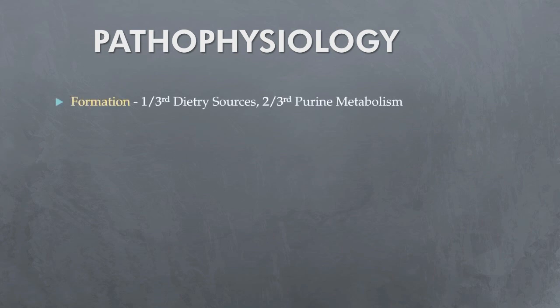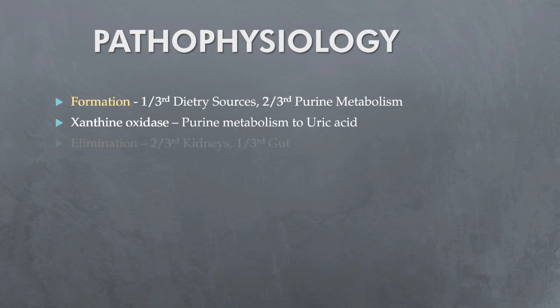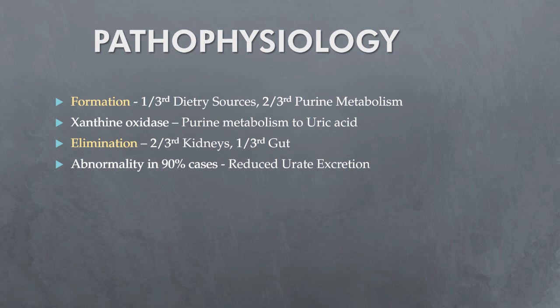About one-third of body uric acid pool is derived from dietary sources and two-thirds from endogenous purine metabolism. The concentration of uric acid in body fluids depends on the balance between endogenous synthesis and elimination by kidneys and gut. Xanthine oxidase plays a pivotal role in purine metabolism, catalyzing the conversion of hypoxanthine to xanthine and xanthine to uric acid. In over 90% of patients, the main abnormality is reduced uric acid excretion by the kidneys. Impaired renal excretion of urate also accounts for hyperuricemia in chronic renal failure and for hyperuricemia associated with thiazide diuretic therapy.